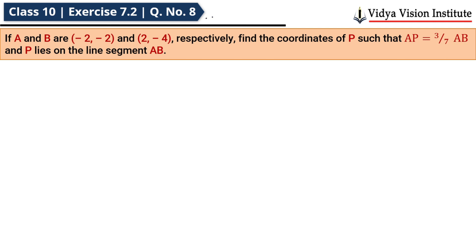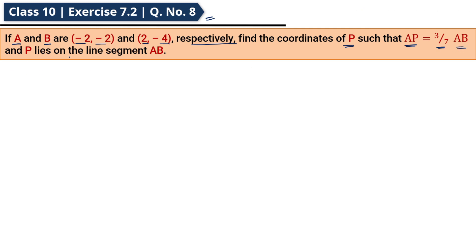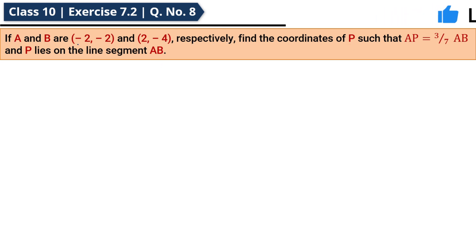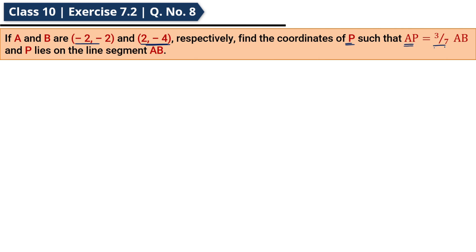Class 10th Exercise 7.2, Question 8: If A and B are (-2, -2) and (2, -4) respectively, find the coordinates of P such that AP is equal to 3/7 AB, and P lies on the line segment AB. A line segment with end points is given, and P is a point on it such that AP = (3/7) AB. We need to find the coordinates of point P.